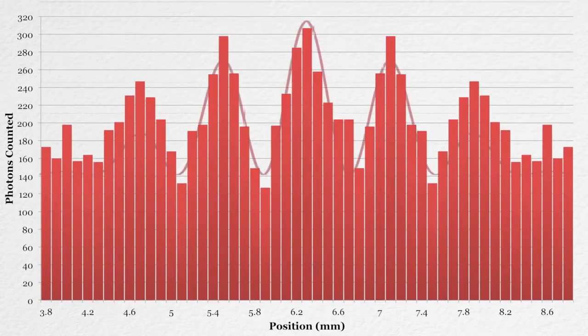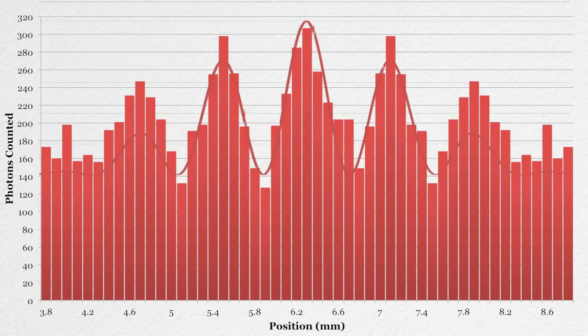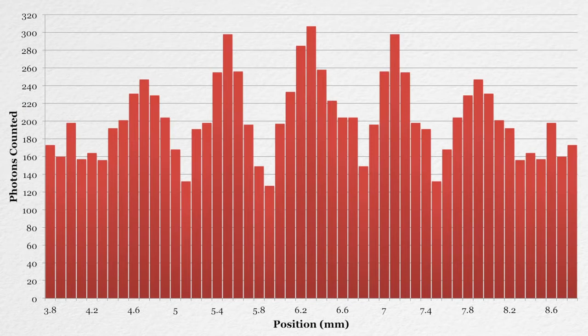You can clearly see the same interference pattern that we got when we were sending tons of photons through, but we're getting it out of single photons. We're counting up individual photons. And that pattern is emerging as we aggregate the results over time.